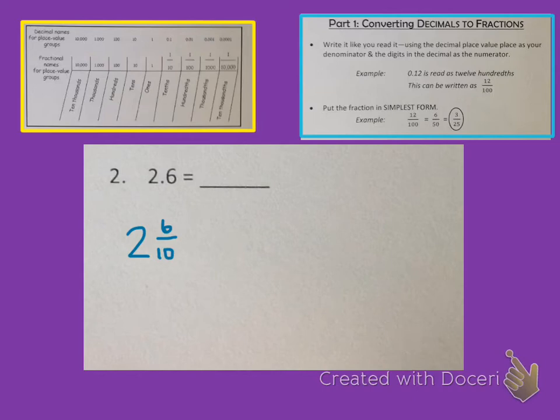So 6 over 10 can be simplified. What can go evenly into both 6 and 10? If you said 2, that's correct. So I'm going to divide both the numerator and the denominator by 2. And I will still have 2 as my whole number. In fact, we could go ahead and just write that first up there because we know it's going to be there. So we have 2 and 6 tenths. 6 divided by 2 is 3. 10 divided by 2 is 5. And then I can't simplify that any further. So our answer here is 2 and 3 fifths.